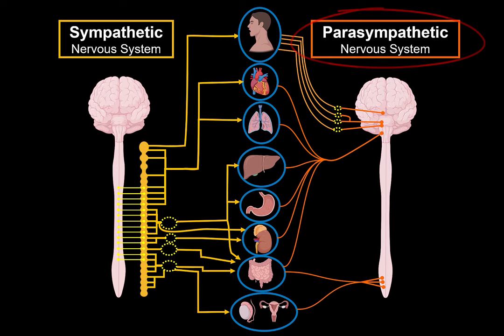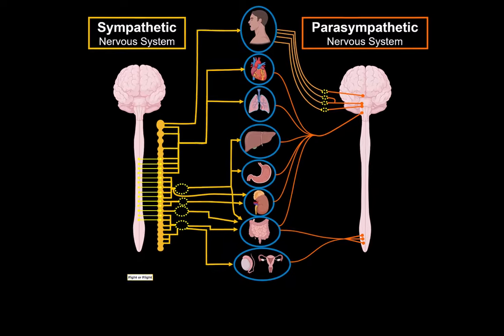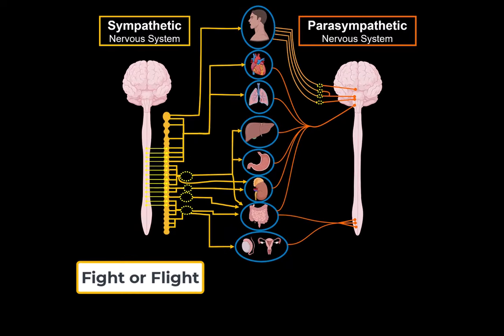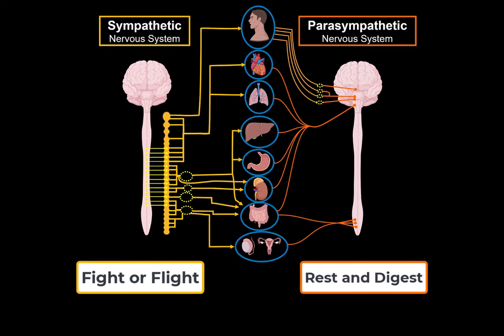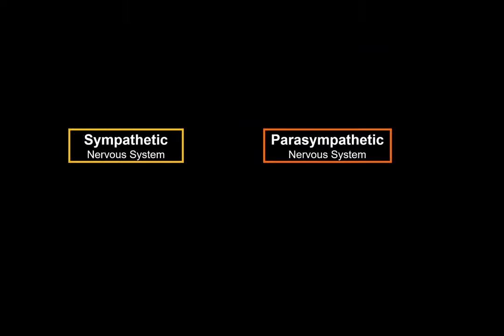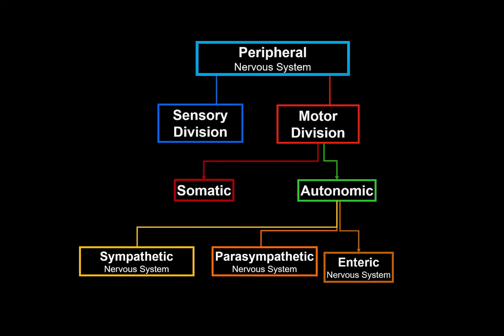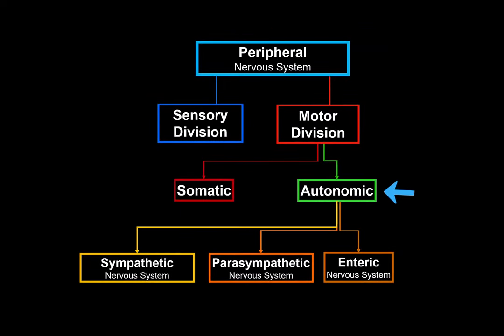As you see from this brief diagram, the sympathetic and the parasympathetic parts of our nervous system control more or less all of our internal organs. Sympathetic being the fight-or-flight response and parasympathetic being the rest and digest response. And they're both, as you see here, a part of our autonomic nervous system, which is the motor division of our peripheral nervous system.